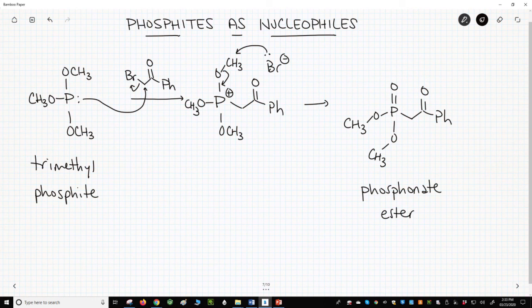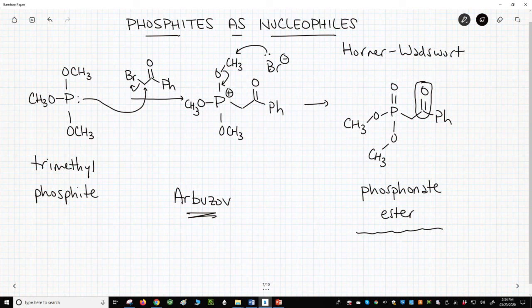This overall reaction is called the Arbuzoff reaction. This type of phosphonate ester in which the R group on phosphorus has a carbon with an electron withdrawing group, most often a carbonyl, is very often used in the Horner reaction. We'll see this later in the playlist.